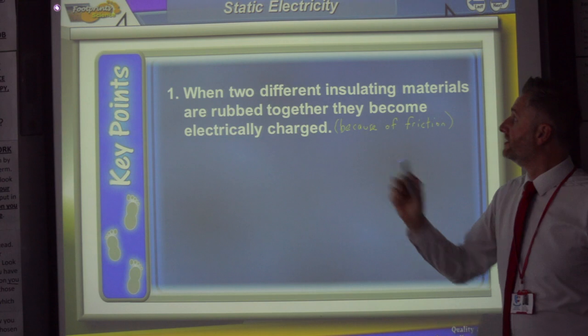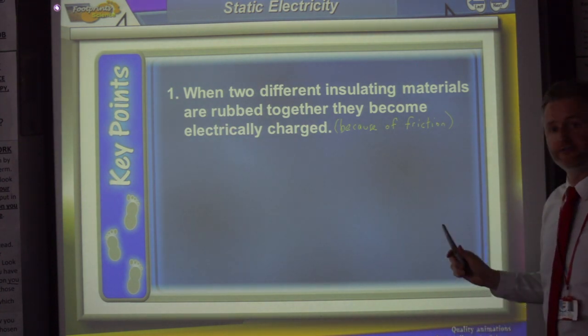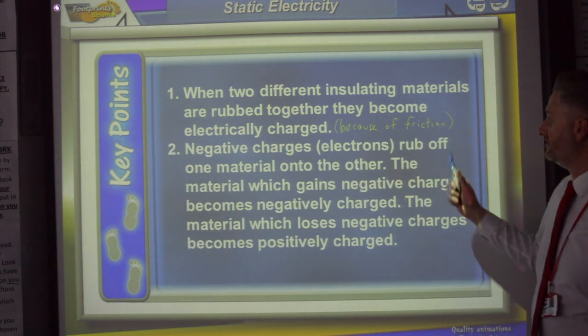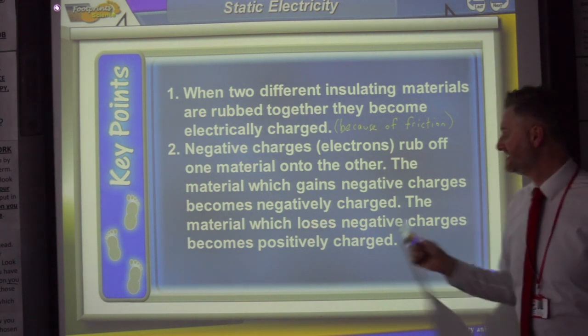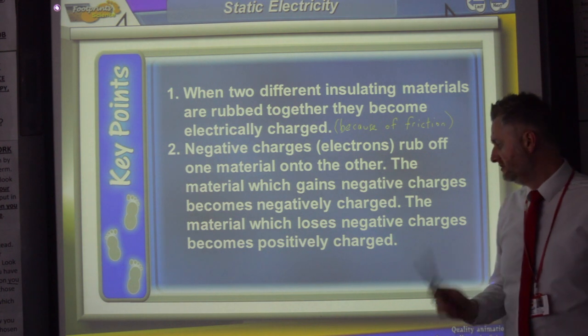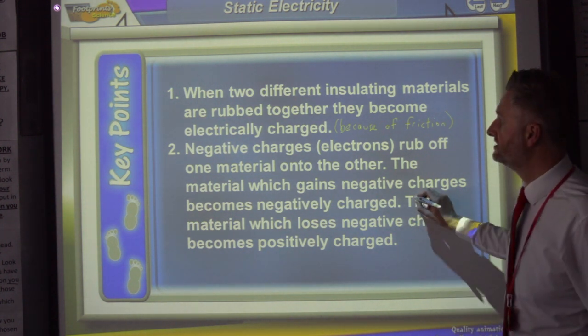So, static electricity. When two different insulating materials are rubbed together, they become electrically charged. And that's because of friction. Negative charges, electrons, rub off one material onto the other. The material which gains the negative charges becomes negatively charged. And the material which loses the negative charges becomes positively charged. That's very, very important that you understand that.